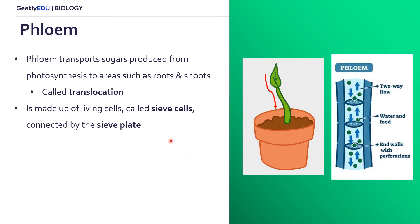Secondly, we have phloem. Phloem is aimed to transport mainly sugars and also some water. This is transported from photosynthesis, which happens mainly in the leaves, to areas which need the sugar and energy, such as roots and shoots — essentially the new growth parts of a plant.